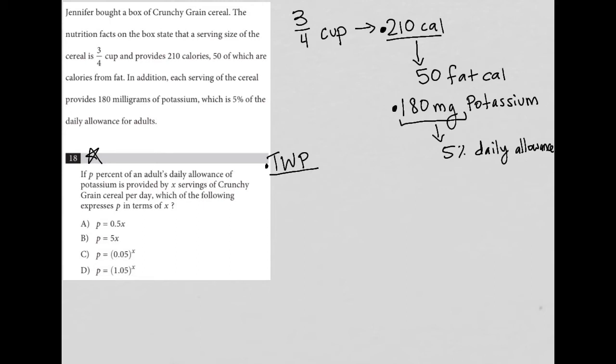So the first thing I read here is if P%. So on this test, and really in math in general, we're never really going to use a percentage as part of our mathematical equation. We will always convert a percentage into its decimal form. For instance, 5% is the same as 0.05.